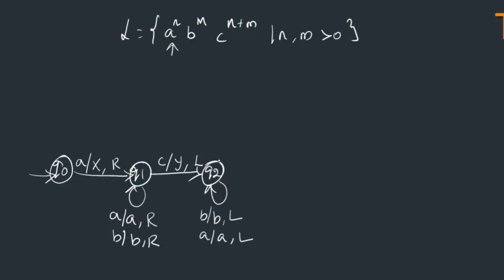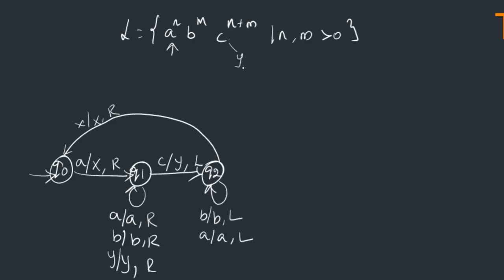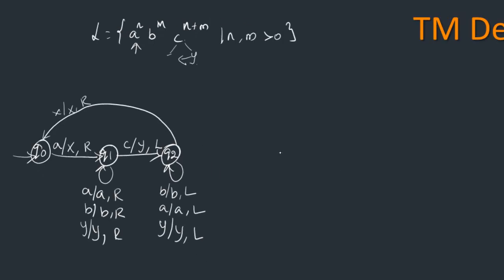You have to keep doing this until you see an x. When x is seen, take a right turn to reach the next symbol. If the next symbol is 'a', replace it with x and keep moving right. This time, what will be on the input is additional a's, b's, and previously converted y's — so we add y/y transitions here. Once a c gets converted to y, while moving left, the previously converted y's will also be present on the input.